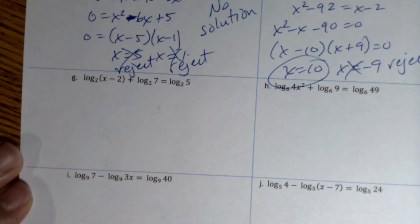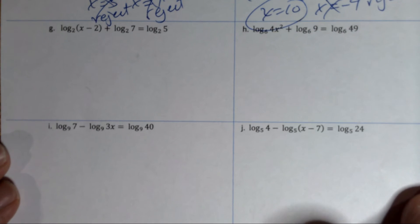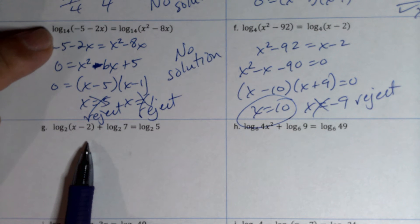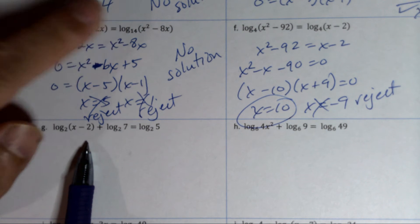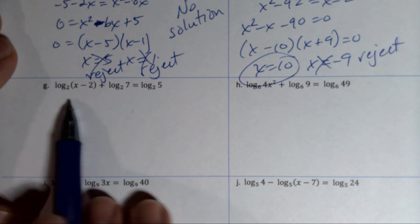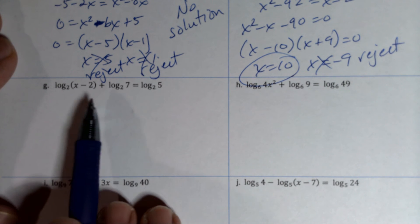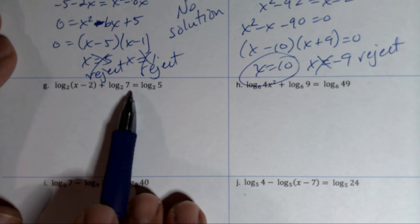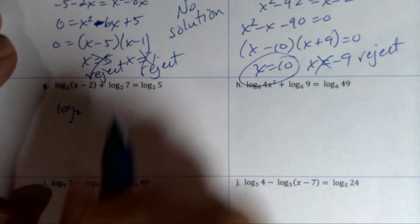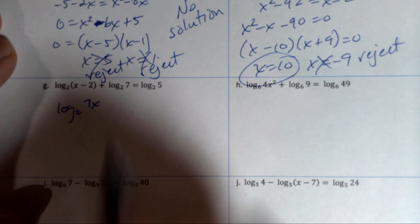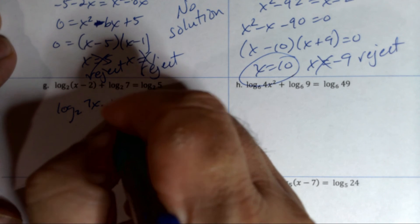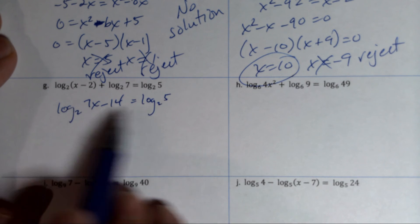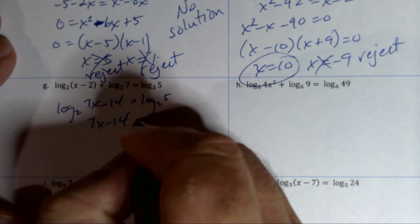Example G is different — there are two logs on the left, which is too many. We use the logarithm property to combine them. Since it's addition, we multiply the arguments: log base 2 of (7x − 14). The right side doesn't change. Now with one log on each side, we can drop them.